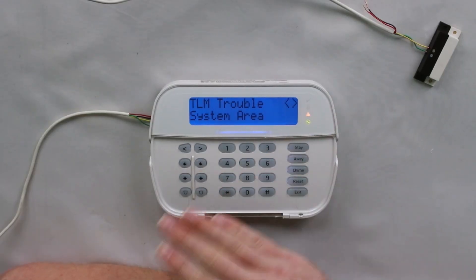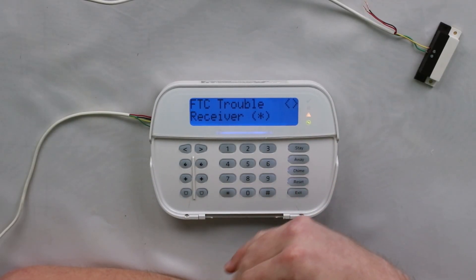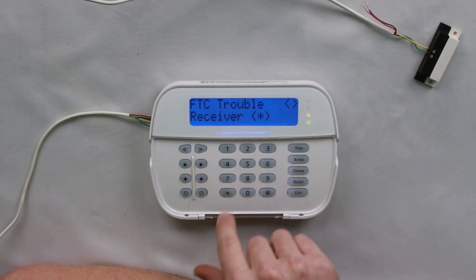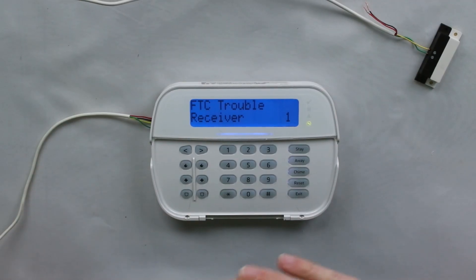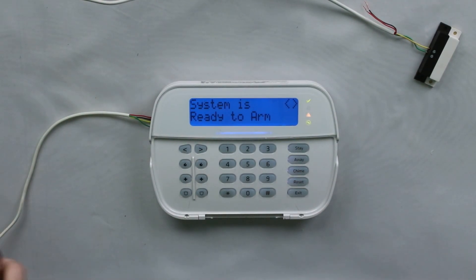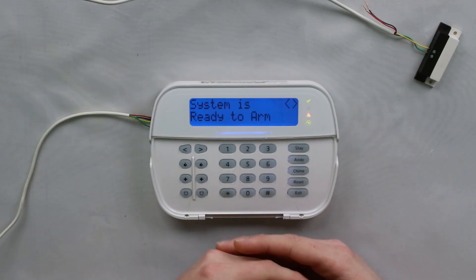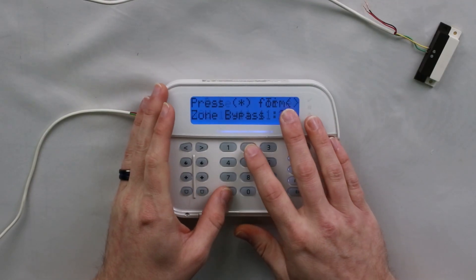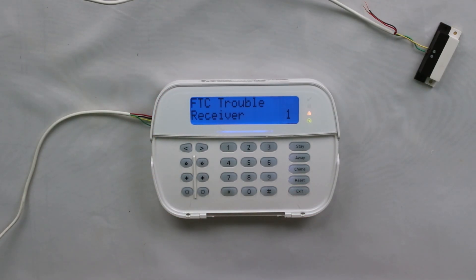And then if you hit star, it's going to say TLM, that's because I had to turn the phone line on. But you'll also see, this is what you would normally see with any communicator, is FTC trouble receiver. And then it's going to have a star there. If you hit star, it is going to tell you what receiver had the failure to communicate. So this is where it can get a little confusing because the system has multiple receivers. And whenever you set the system up to communicate using a different communication path, either the communicator determines what receivers it's going to use or whoever set up your panel is going to do so. As you can see on my trouble there, I had a failure to communicate receiver one. So that means that because I set up receiver one's phone number, that's where it tried to send the signal out.